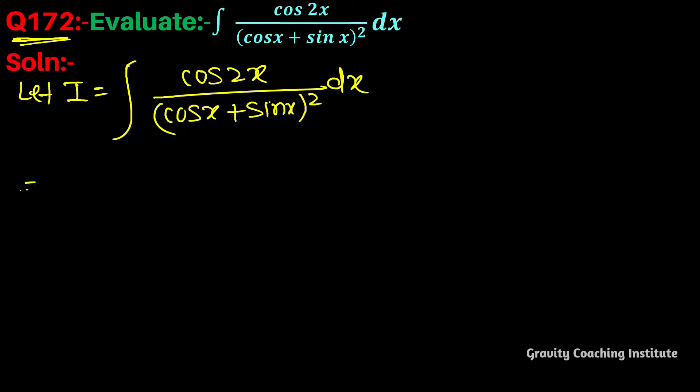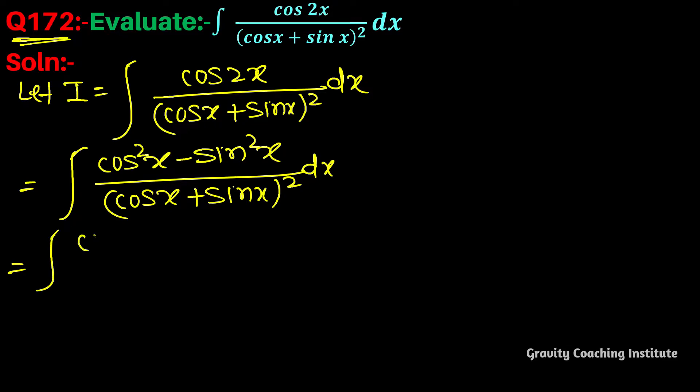Here we will use the formula for cos 2x, which is cos squared x minus sin squared x, upon (cos x plus sin x) squared. In the numerator, we will use the identity a squared minus b squared.